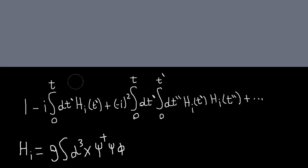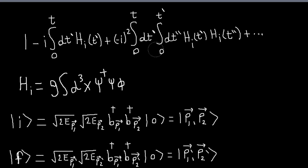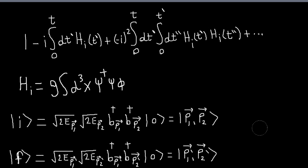Before, in the first example, we worked with the first-order term because it was the lowest order non-vanishing term for that process. But the problem we're going to do now involves scattering of two B particles. The initial state has two B particles of momenta P1 and P2, and the final state has two B particles of momenta P1' and P2'. To get from this state to this state, we would need two psi daggers and two psi's to operate — to destroy these two B particles and then create two more. Since this first-order operator only involves one psi dagger and one psi, there's no way for this term to contribute to this process.